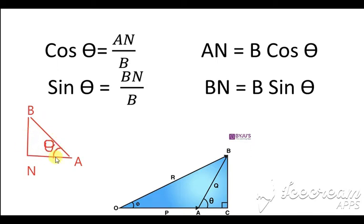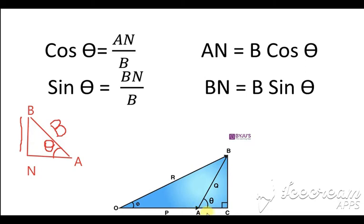Considering the right-angled triangle, we can find the value of sine and cosine. What is the formula for sine theta? It is opposite divided by hypotenuse. The opposite side here is BN, divided by the hypotenuse, which we represent as B (the vector B). So sine theta = BN/B, and therefore BN = B sin theta.